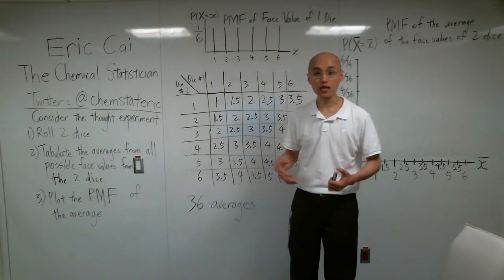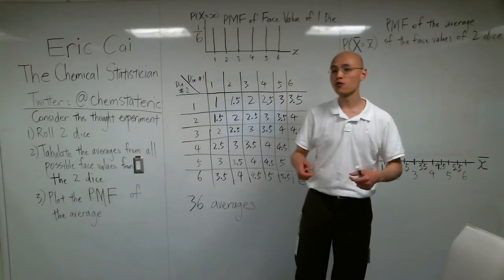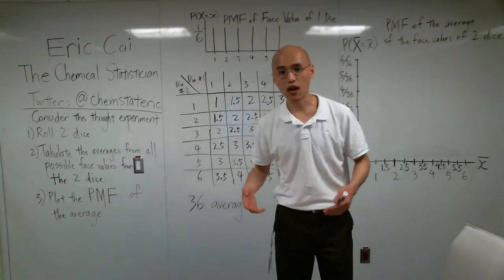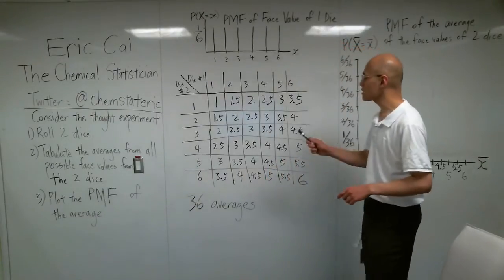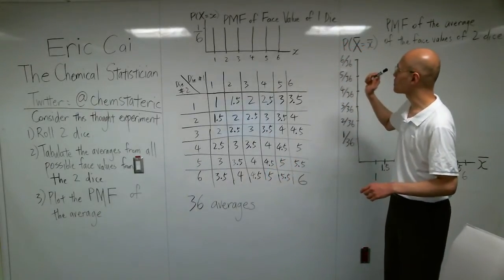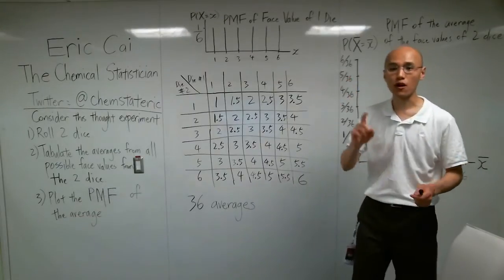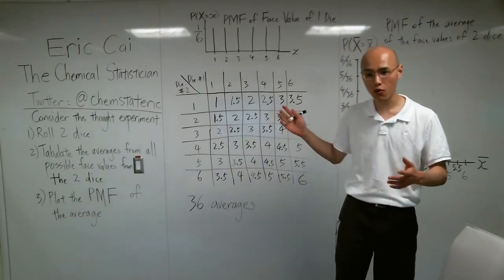Notice that the average is a random variable, because if you roll two dice, the average could take on one of many values. Now, before we get to that, I want to review the probability mass function of the face value of one die. This is going to be important later on.